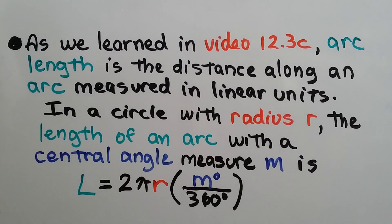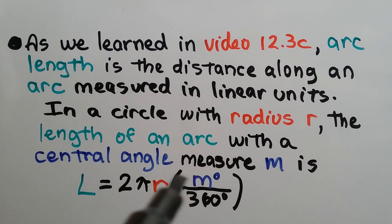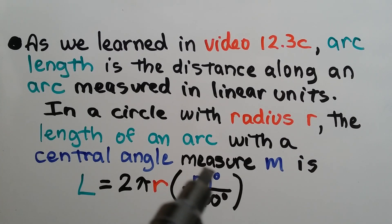As we learned in video 12.3c, the one right before this one, arc length is the distance along an arc measured in linear units — centimeters, feet, inches. In a circle with radius r, the length of an arc with a central angle measure m is: arc length l = 2 × π × r × (m° / 360°).